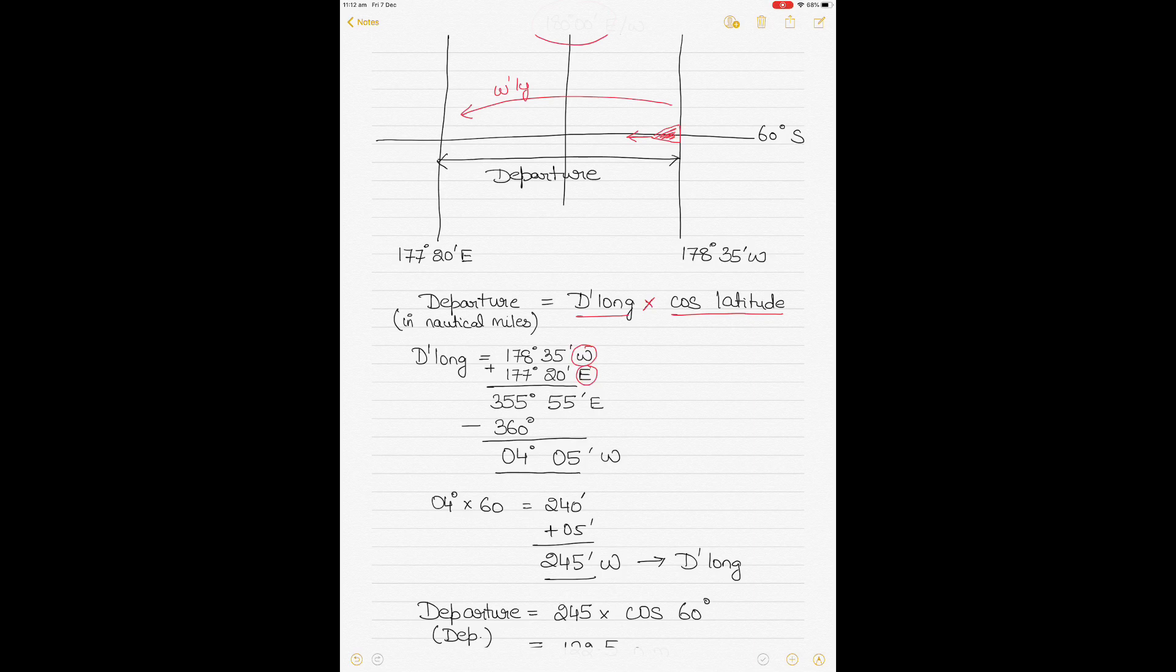But because longitudes cannot be greater than 180, you will subtract it from 360 and you will reverse the direction because actually speaking, the vessel is traveling in a westerly fashion as you can see in the above diagram. The answer that you get is 4 degrees and 5 minutes west. That's the D long.